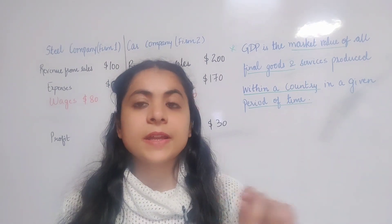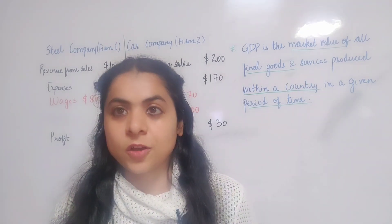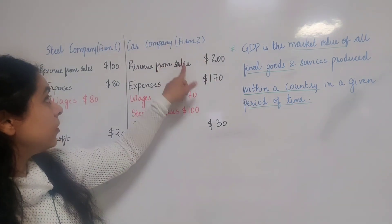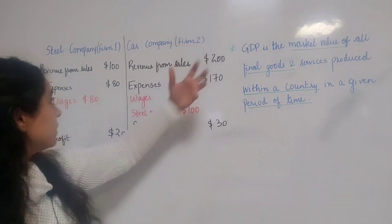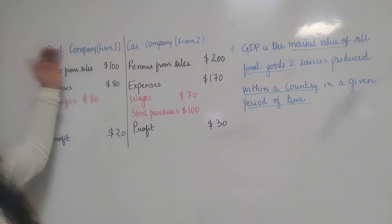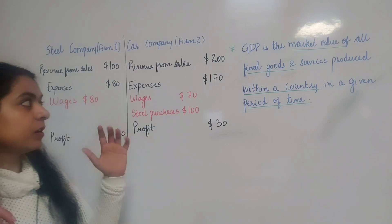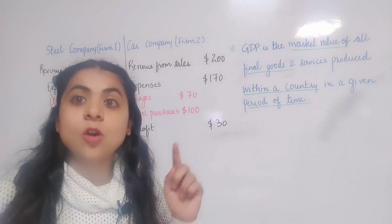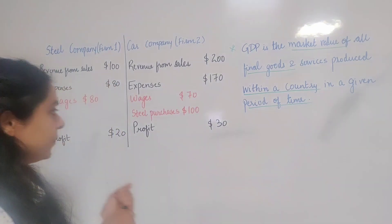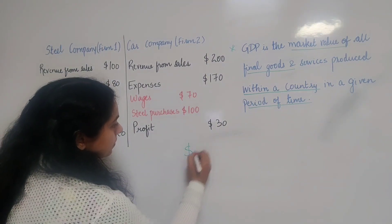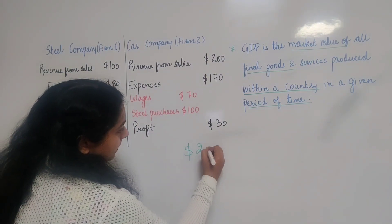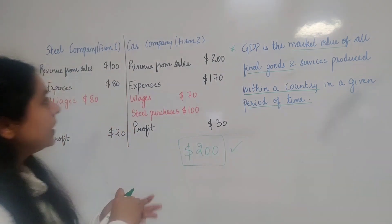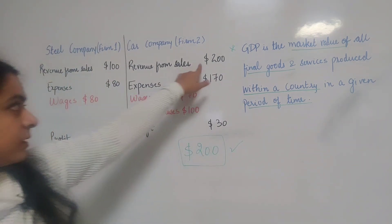Now, how will you define aggregate output in this economy? Is it equal to $200 as the value of cars plus $100 as the value of steel, making total aggregate output $300? Or is it equal to $200? The correct answer is $200, as the value of cars.